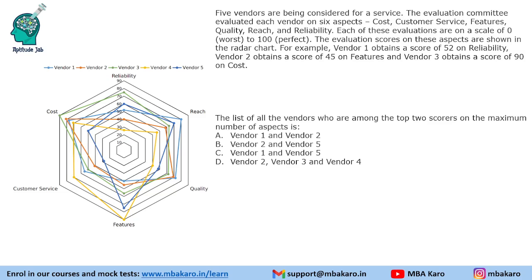The third question asks for the list of all vendors who are among the top two scorers on the maximum number of aspects. We identify the top two vendors in each aspect: reliability — vendors three and five; reach — vendors one and five; quality — vendors one and two; features — vendors four and five; customer service — vendors four and one; cost — vendors three and two.